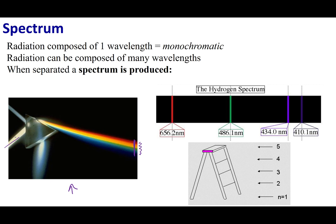Now let's do the same experiment with a hydrogen lamp. I take hydrogen, give it energy using electricity, and the hydrogen will start to glow. When I take the light from my hydrogen lamp and put it through the same kind of prism, I don't get a continuous spectrum. I get what's called a line spectrum.